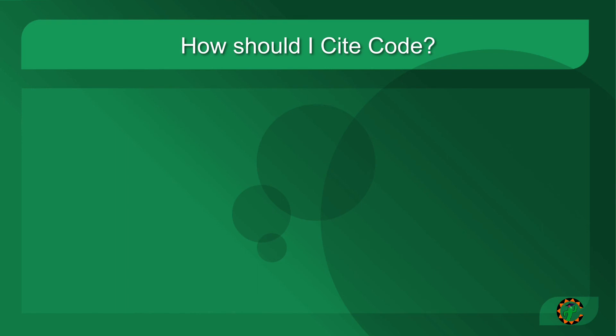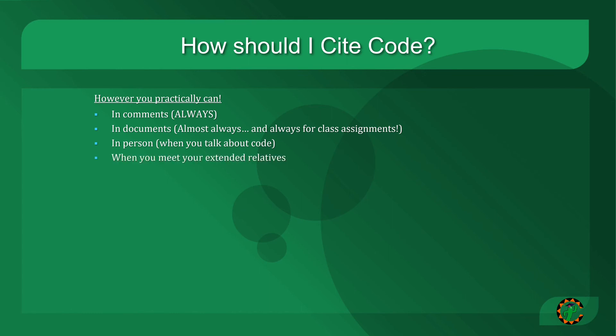So now that I've made a big deal out of citing code, you may be wondering, how should I actually do it? And the answer is, in any way you possibly can. You should almost always do it in comments for the code because that's the easiest place for someone to find a citation. If you have documentation, if you're in person, you talk about some code, and you got that idea from someone else, you should probably mention that you got it from someone else, when you meet your extended relatives at Thanksgiving or Christmas and until you draw your final breath. Okay, so I'm kidding about the last two, but hopefully you get the idea.